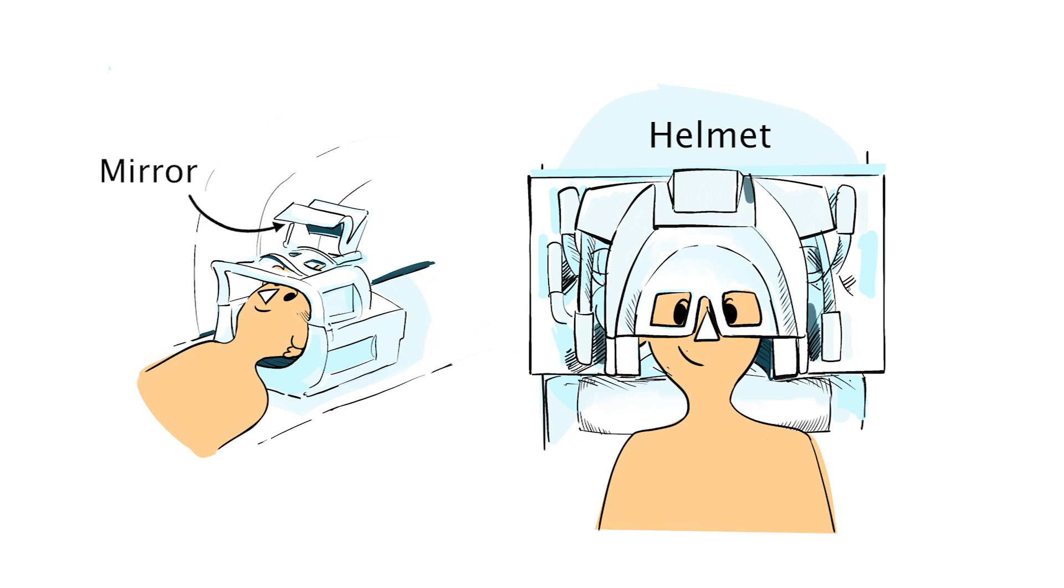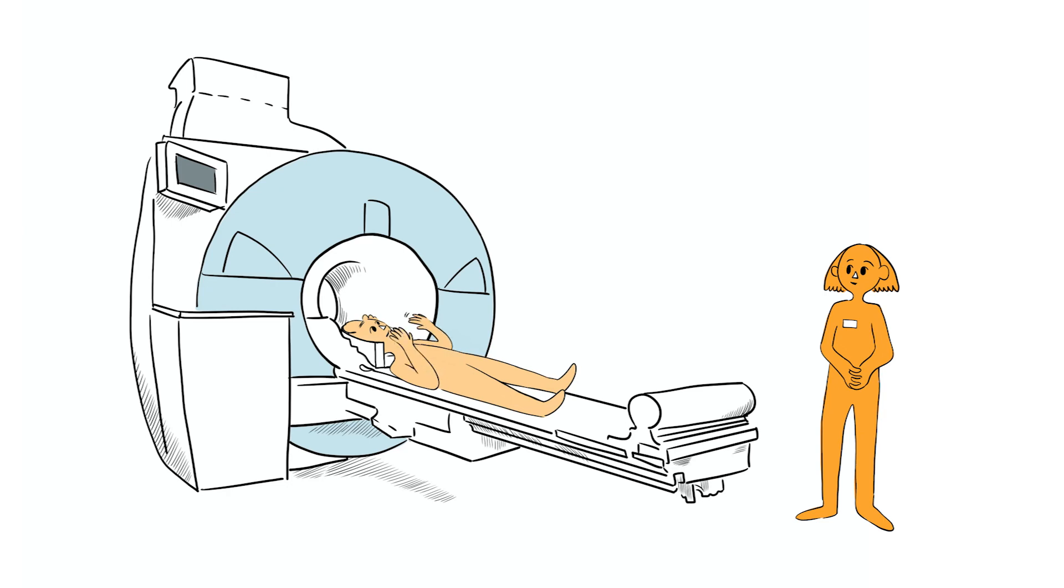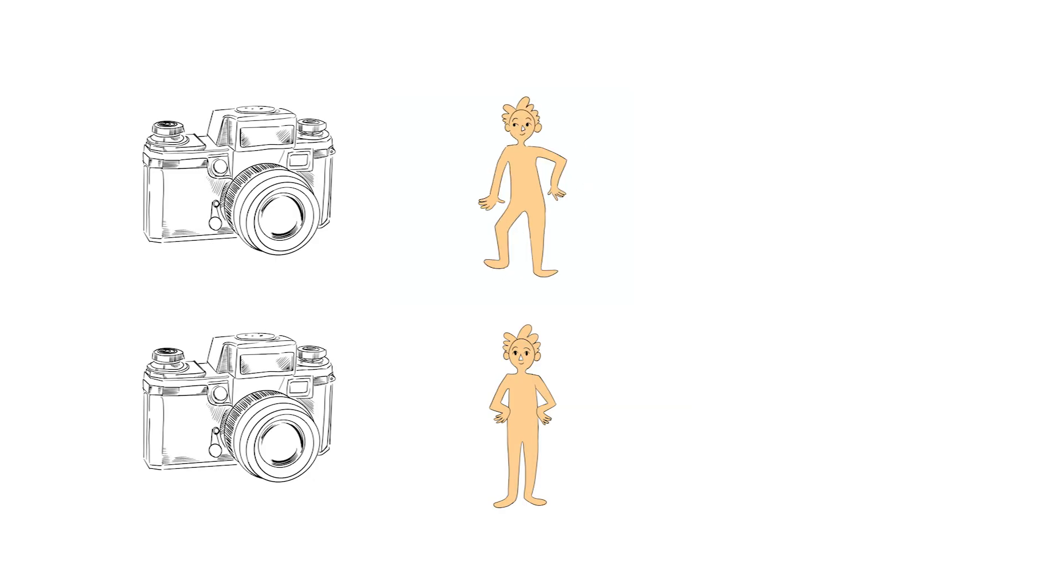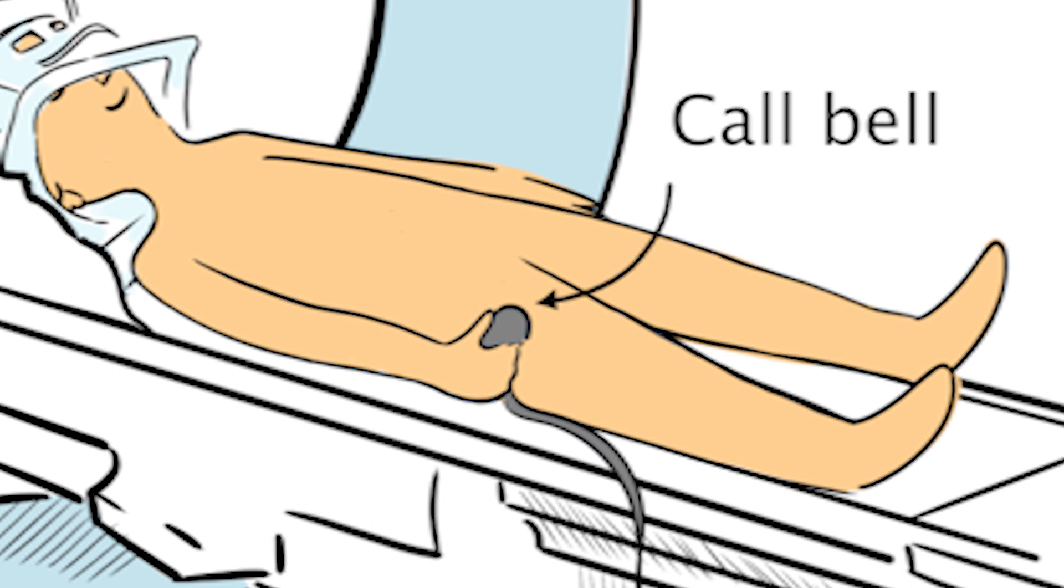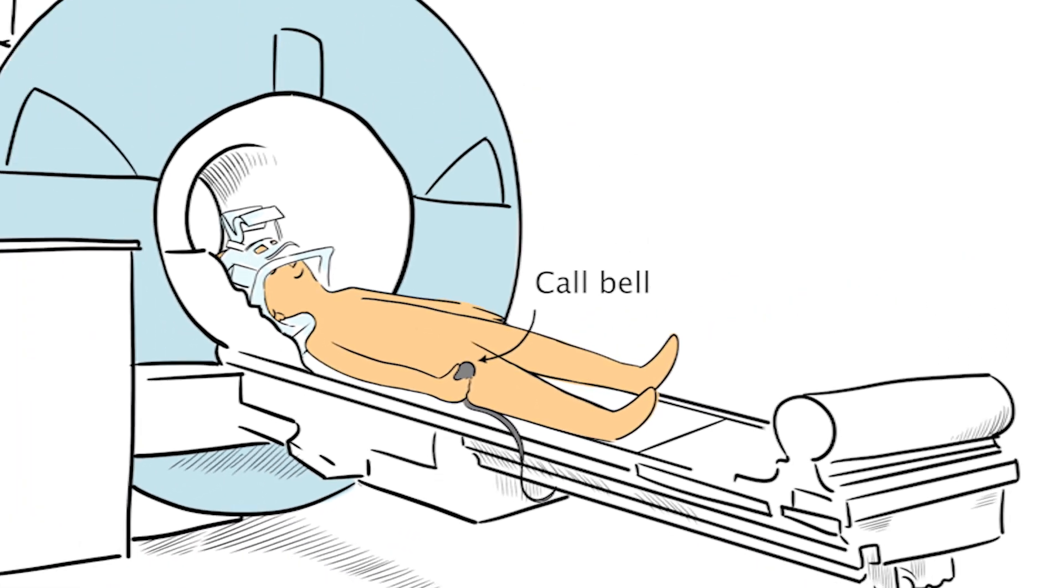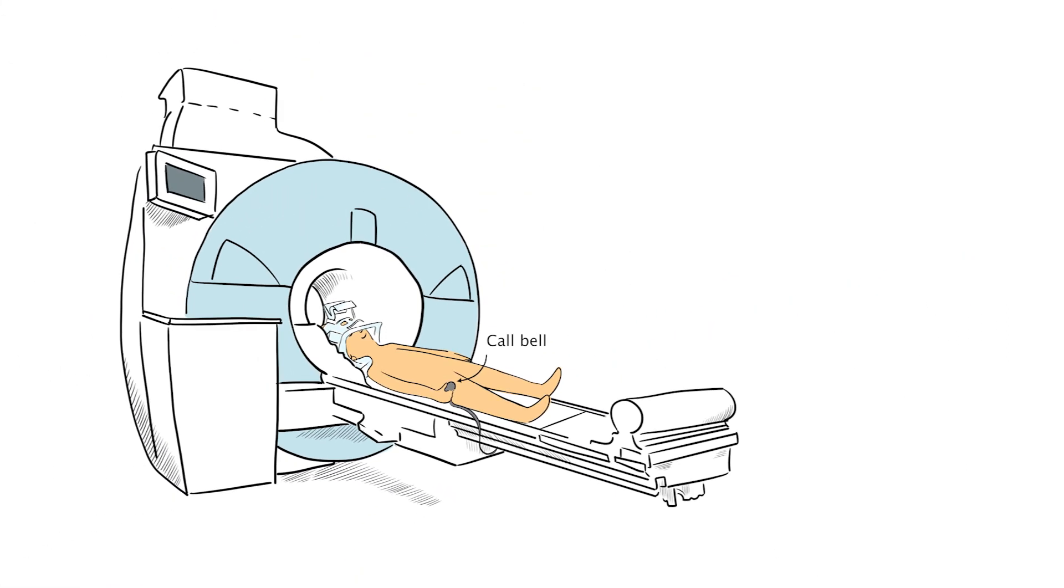We also measure your heart rate with a sensor on your finger. Can I move around while I'm in the scanner? No. We need you to stay as still as possible please. This is because MRI is like a camera. If you move while the photo is being taken, the picture becomes blurry. This is similar for MRI. If you move during the scan, the quality of the image won't be as good. We give you a call bell that's with you throughout the scan. You can squeeze this at any time if you feel uncomfortable. We talk to you and can stop the scan at any time.